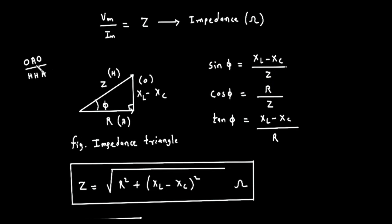Cosine of phi is adjacent over hypotenuse. This gives us Cosine of phi equals R divided by Z. This value is also known as the power factor of the circuit.